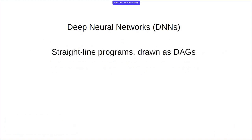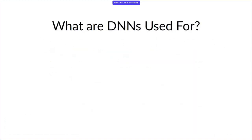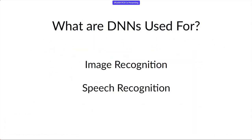So we're talking about neural networks. Hopefully many people have seen these. They look like straight-line programs — we'll draw them as DAGs. They've got these alternating layers of linear and non-linear transforms. They're used for a bunch of things: image recognition, speech recognition, et cetera.